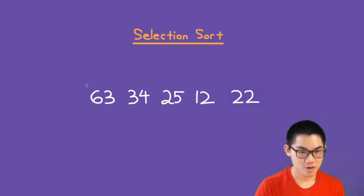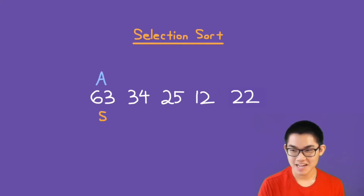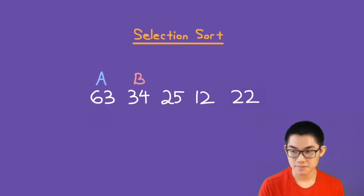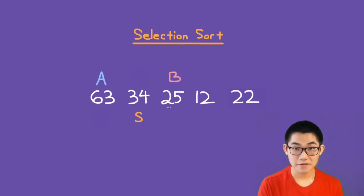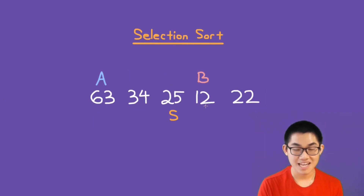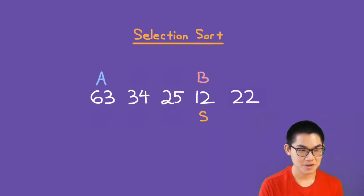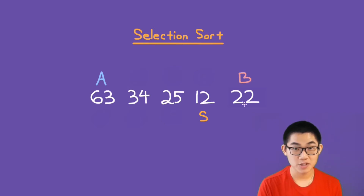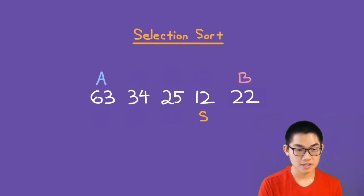Let's do one more example. We put A at the beginning of the array and assume wherever A is is the smallest number. Then we put B next to A. Is 34 smaller than 63? Yes. Is 25 smaller than 34? Yes. Is 12 smaller than 25? Yes. Is 22 smaller than 12? No. B is at the last element, and we swap 63 and 12.